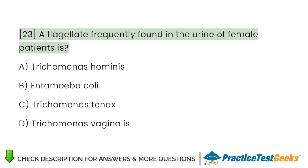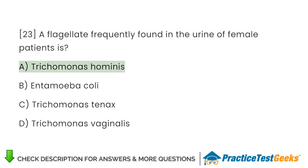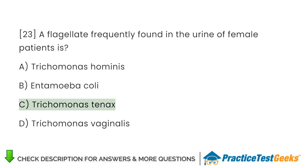A flagellate frequently found in the urine of female patients is: A. Trichomonas hominis. B. Entamoeba coli. C. Trichomonas tenax. D. Trichomonas vaginalis.